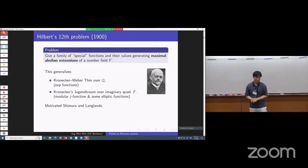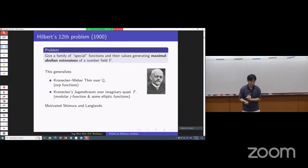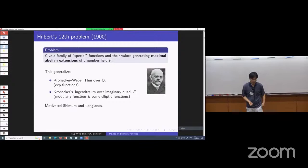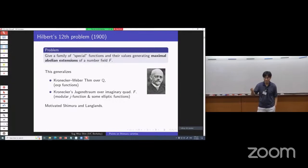More interestingly, in the case where the base field is an imaginary quadratic field — that's Kronecker's Jugendtraum — this was established by Kronecker, Weber, Takagi, and Hasse. The special functions in this case are the modular J-function and some elliptic functions. This problem motivated Shimura and Langlands to go further. I'm not going to talk too much about this problem itself, but how it had an interesting twist and turn to lead us in another direction.